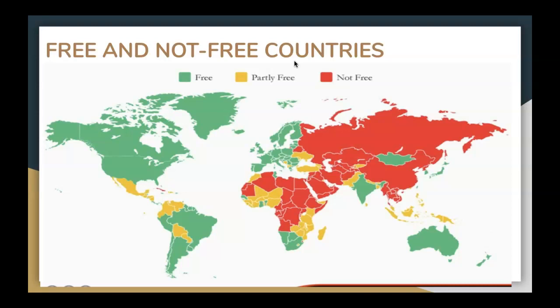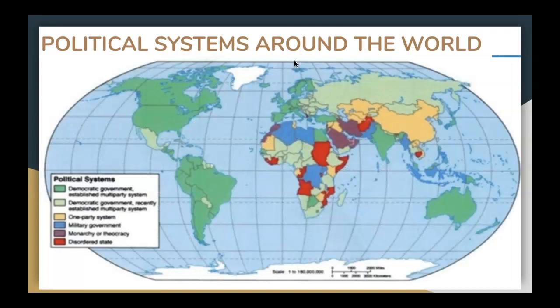This diagram helps explain the status of the world today in regards to different forms of government. There are free countries, partly free countries, and not free countries. What separates these three types comes down to the amount of power that people have, the autonomy they can exert over their own lives, and the type of leaders that lead these countries. This map explains a further breakdown of the different types of political systems that exist around the world — just as the world is unique and eclectic, so too are the governmental systems.